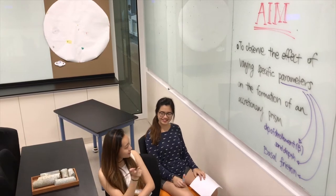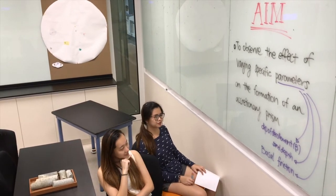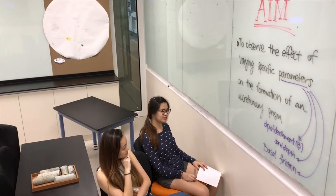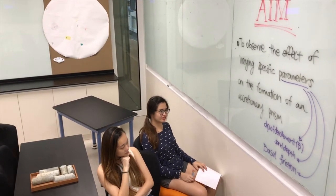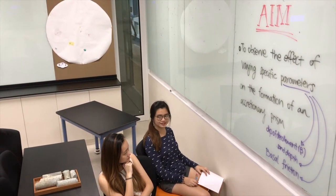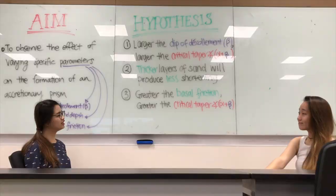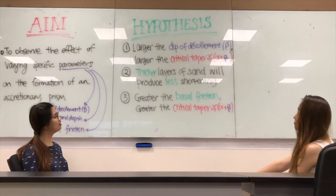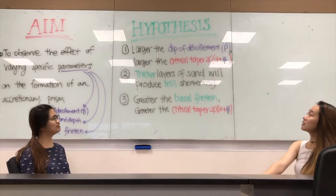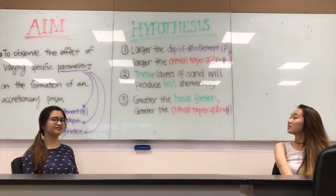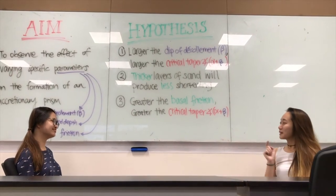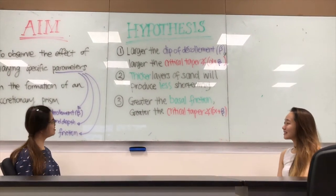Okay. And then we can have a dip of décollement of 0, a sand depth of 5cm, and the grid of the sandpaper will be 120. I think we can have three hypotheses. Our first one can be that the larger the dip of the décollement, the larger the critical taper angle. Is that what Davis said in his paper? I think so!